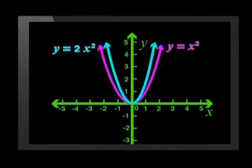When the A value in the formula is 2, the new graph is thinner than the parent graph. The arms of the graph are closer together. The parent graph has been stretched upwards to make this graph.